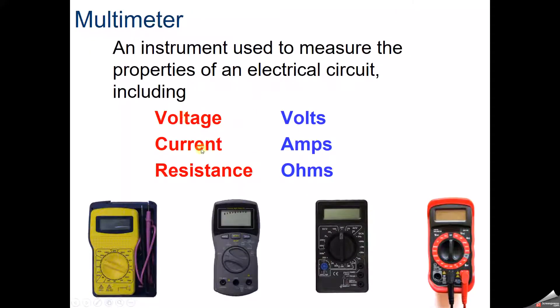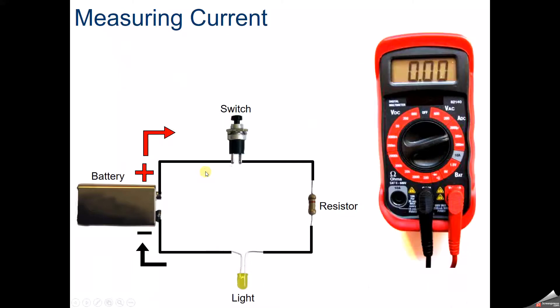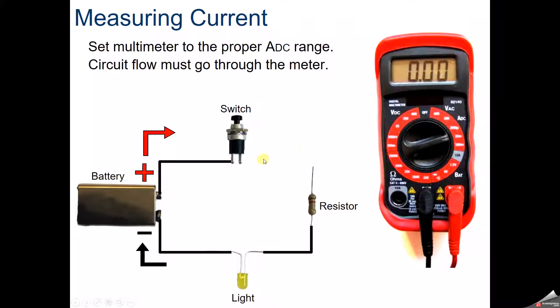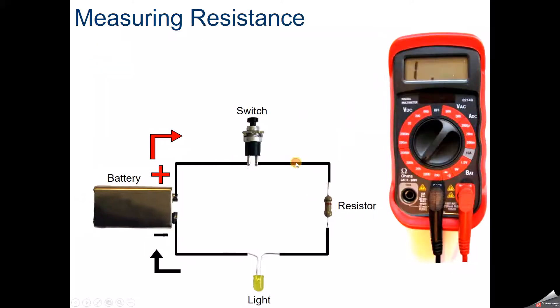A multimeter can measure voltage, current, and resistance. To measure current, we set it to the proper ADC range. Then we have to break the circuit and run it through there, so it measures the flow being created between the two different components.